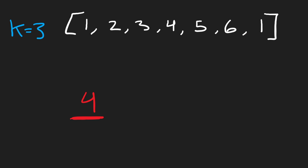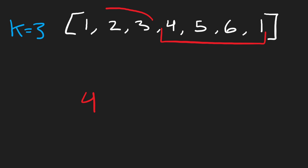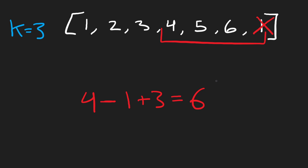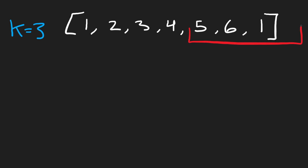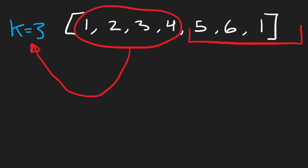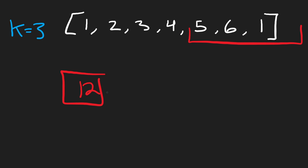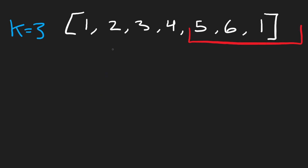We shift the window one final time to the last position — choosing three elements from the beginning. We subtract 1 (enters window) and add 3 (newly exposed): four minus one plus three equals six. Six is not the maximum. We've now covered every possible window position. If we shifted once more there would be four elements outside the window instead of three, which is invalid. So we stop and return 12 as the result.